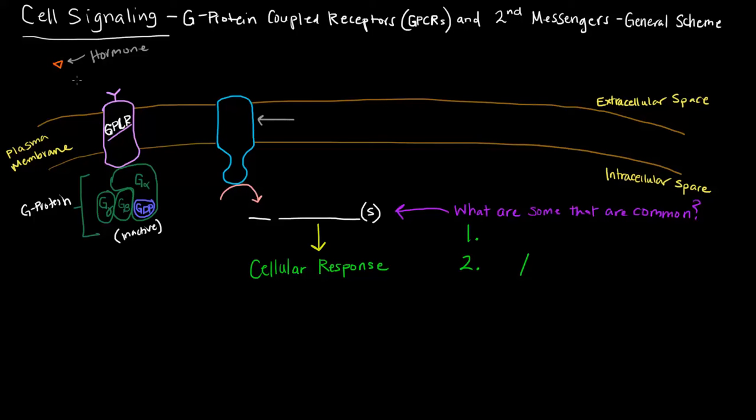How do we activate it? That's when this hormone comes in. The hormone comes in and binds the receptor that it's specific for. That binding event triggers a conformational change in this G-protein coupled receptor, which triggers the activation of this G-protein.